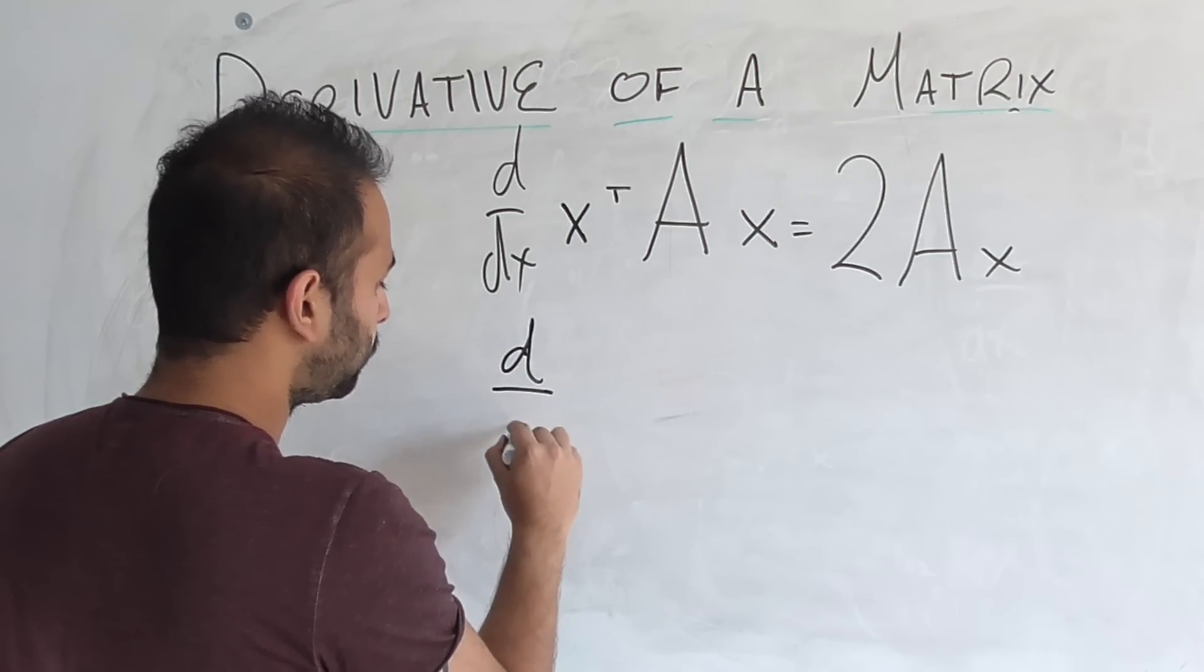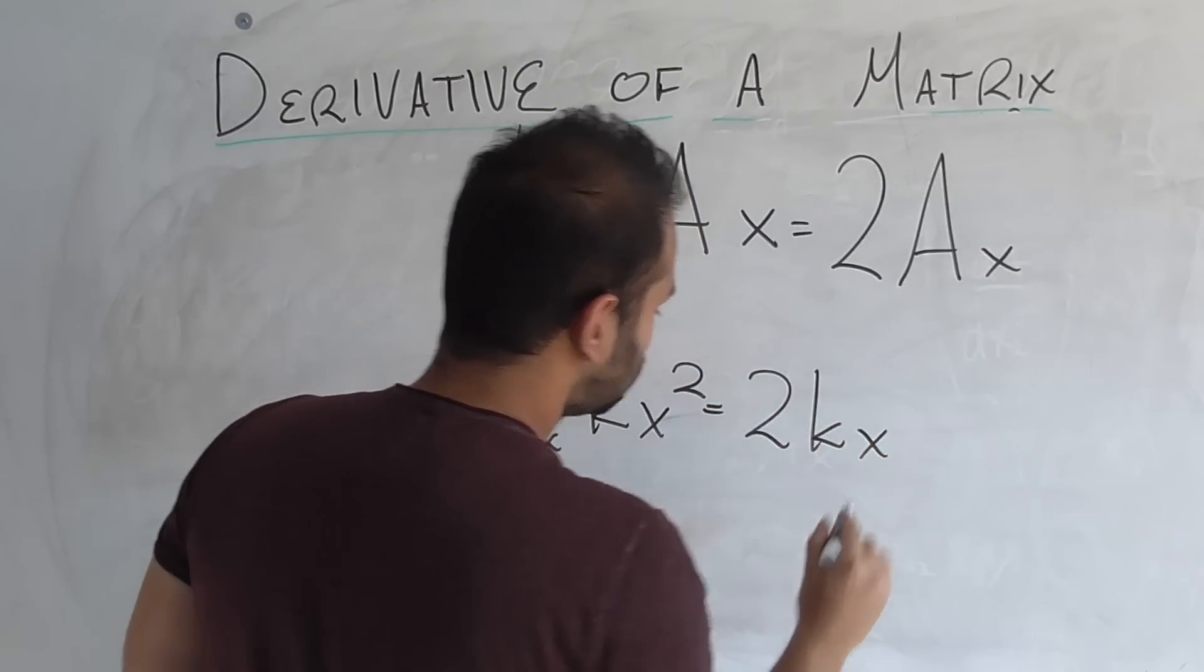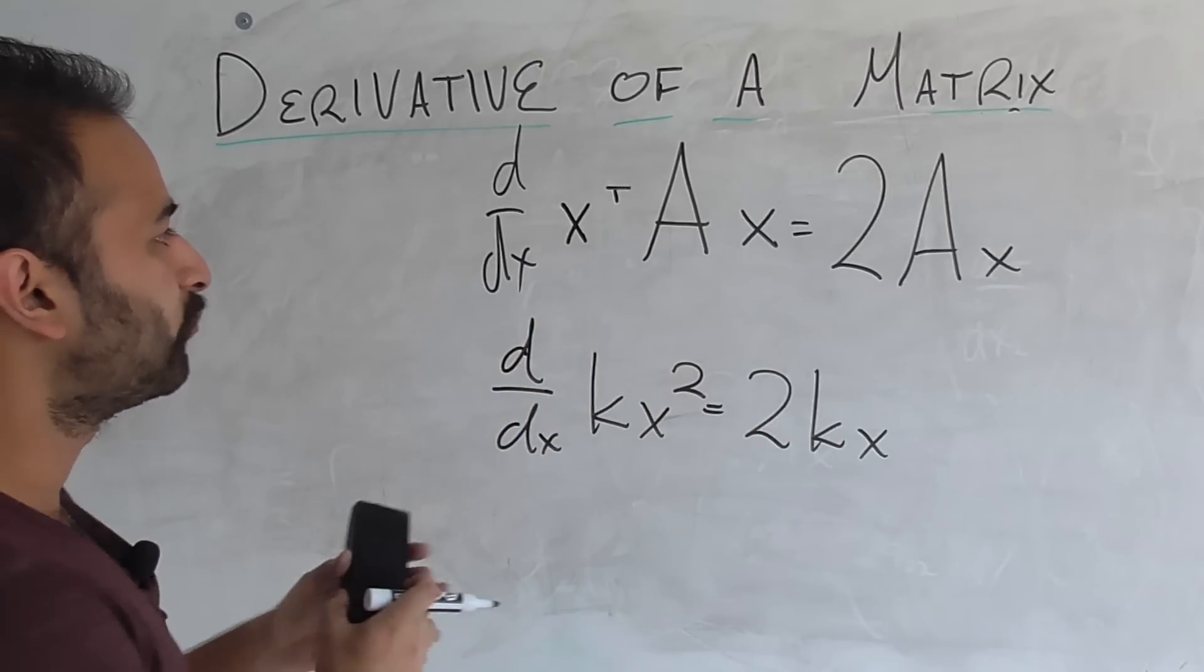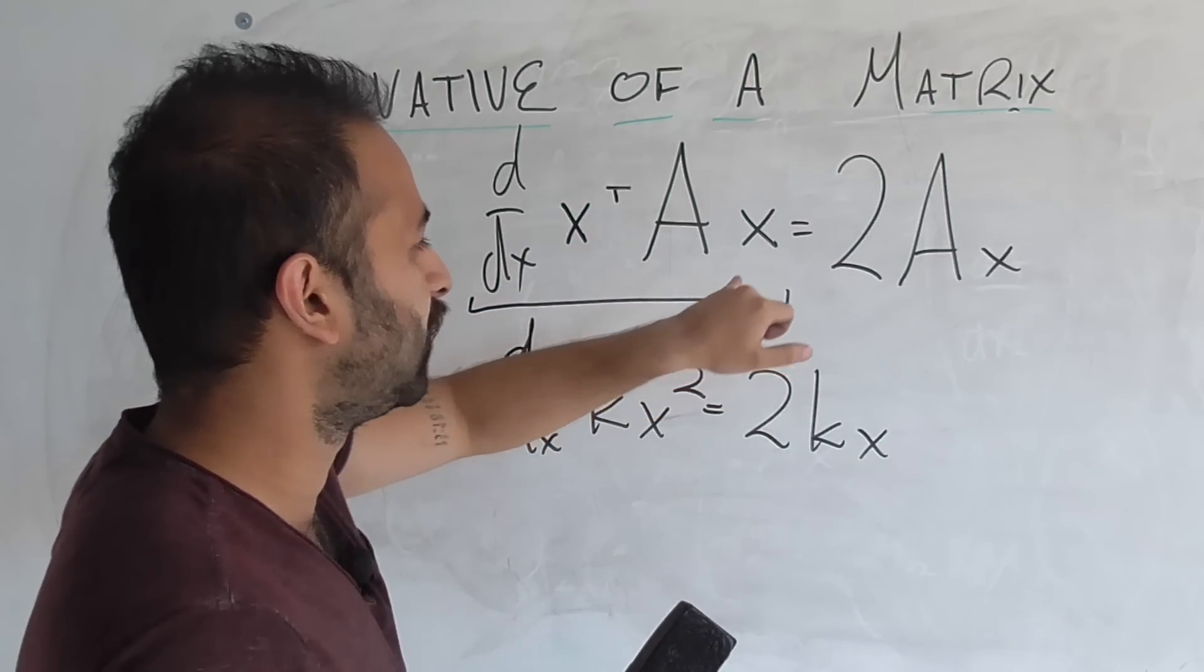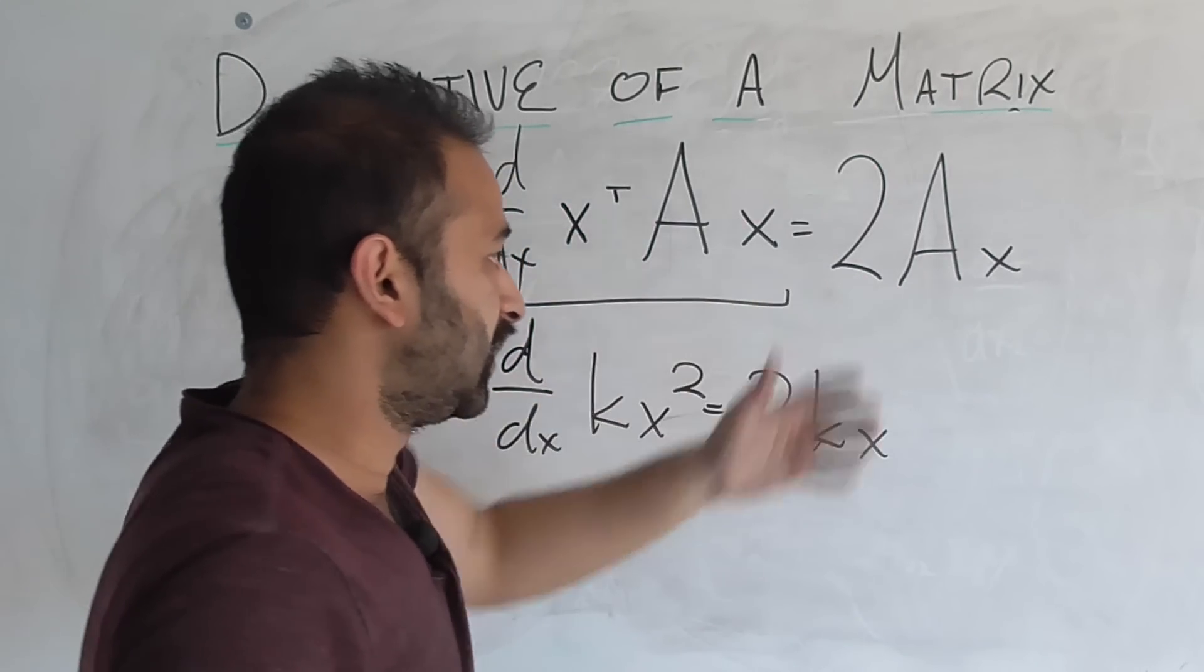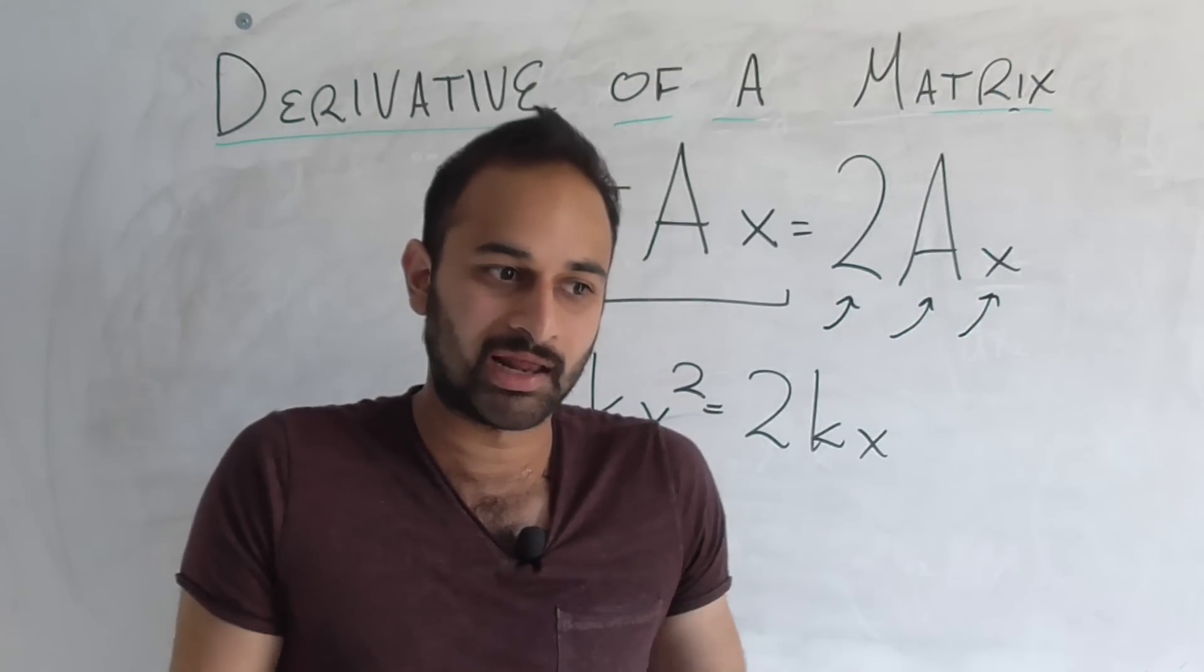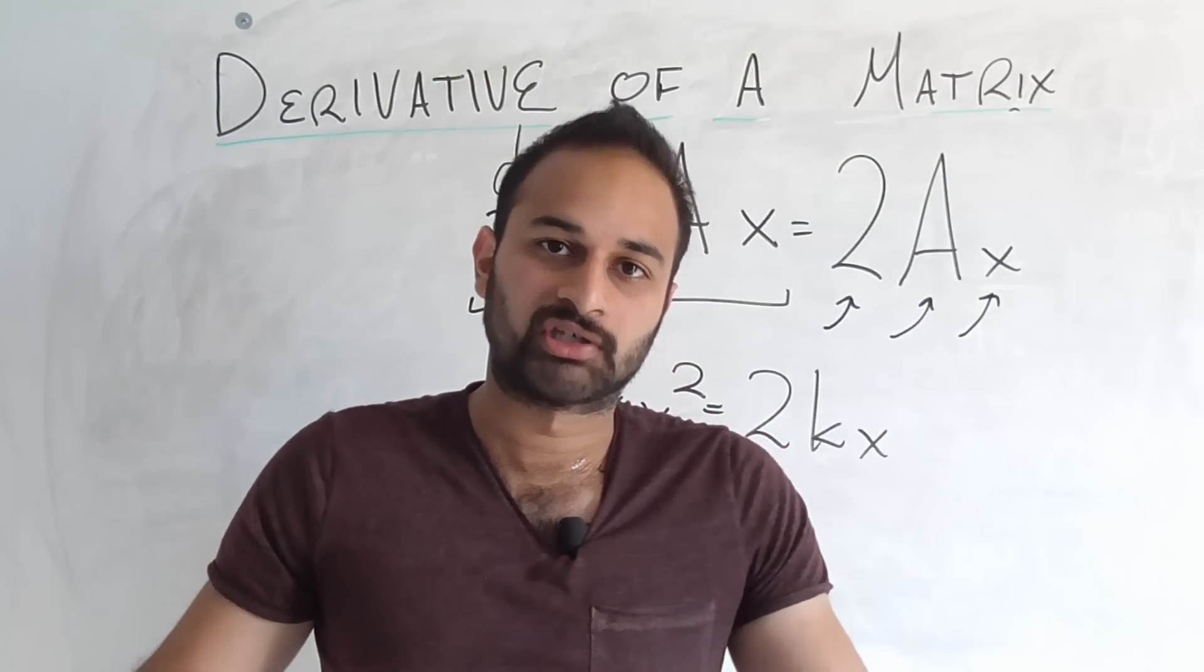It's awesome because it's an analog to the first thing we looked at in this video. So we looked at a derivative with respect to x of kx squared. This quadratic is equal to 2kx. In the same way, this is sort of like the quadratic of matrix operations because we have an x here and an x here. I know it doesn't look exactly the same, but it's kind of like the analog. And its derivative is very similar. It's 2 times a, in this case it was k, times x. So again, we see some really elegant analogs between the derivatives we know and love and these new matrix derivatives.